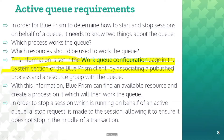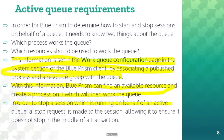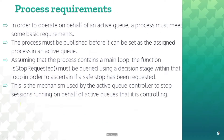With this information, Blue Prism can find an available resource and create a process on it which will then work the queue. In order to stop a session which is running on behalf of an active queue, a stop request is made to the session, allowing it to ensure it doesn't stop in the middle of a transaction. So as I mentioned, if you decrease the value of target resources, then it will request stop the process. Your process should contain request stop logic to avoid any uncompleted transaction.